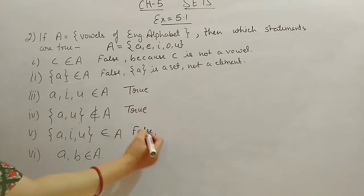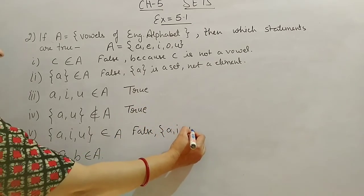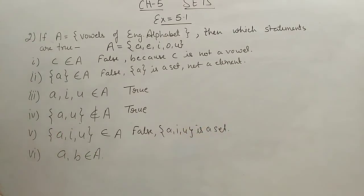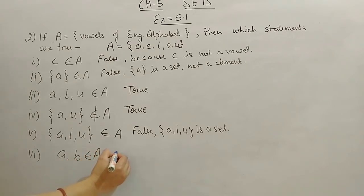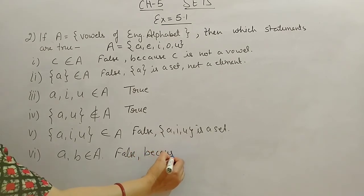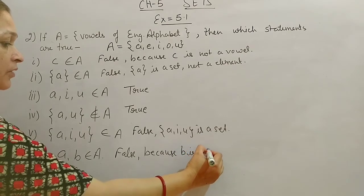Sixth: A and B belongs to A — A is there in the set but B is not. So this statement is also false. The reason is B is not a vowel.